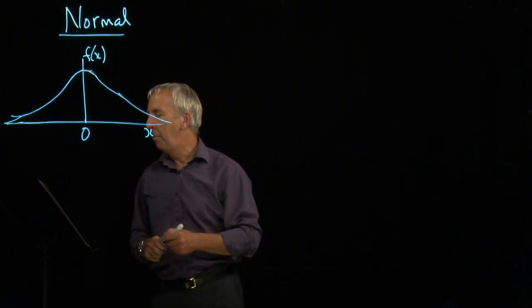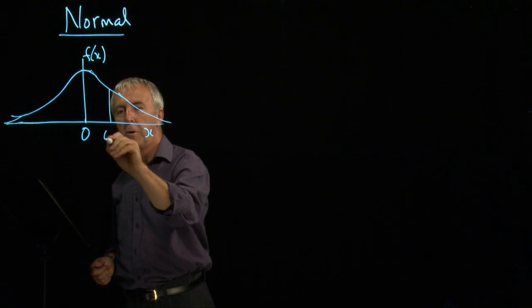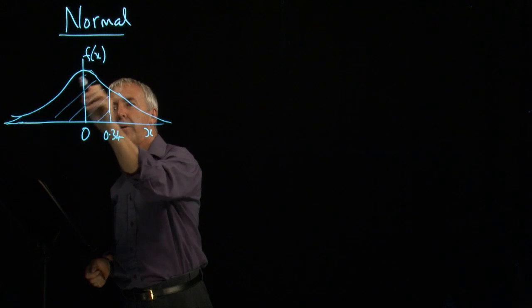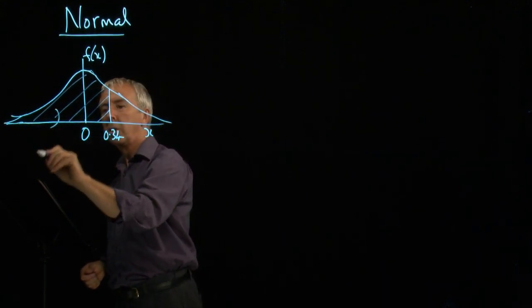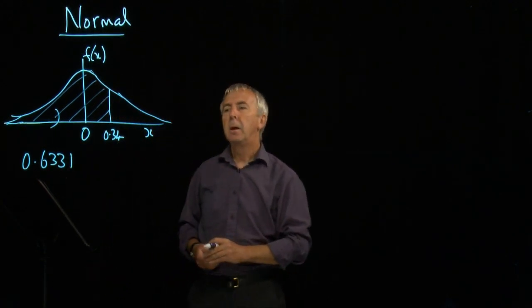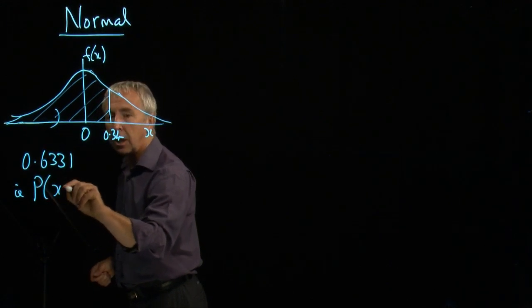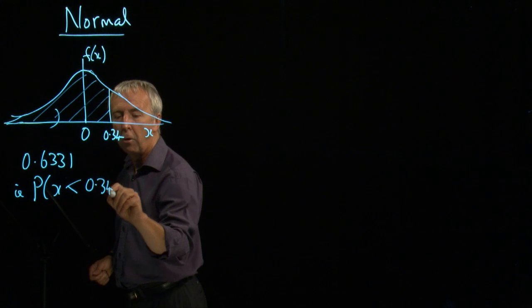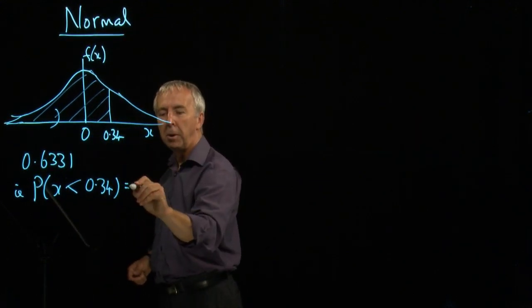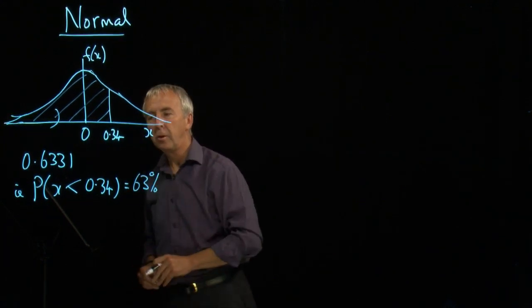In an example, when the variable is 0.34, the area to the left is 0.6331. That tells us that the probability that x is less than 0.34 is the area to the left of 0.34. That probability is 63%, 63.31%.